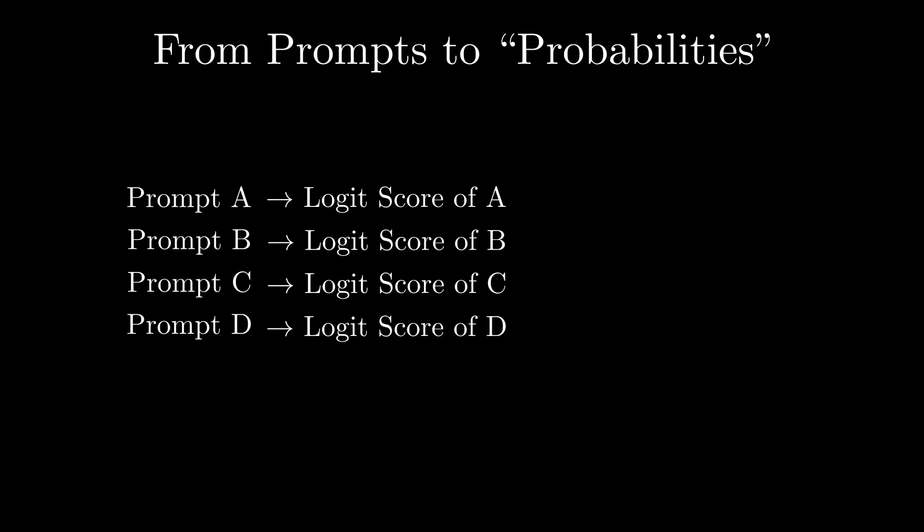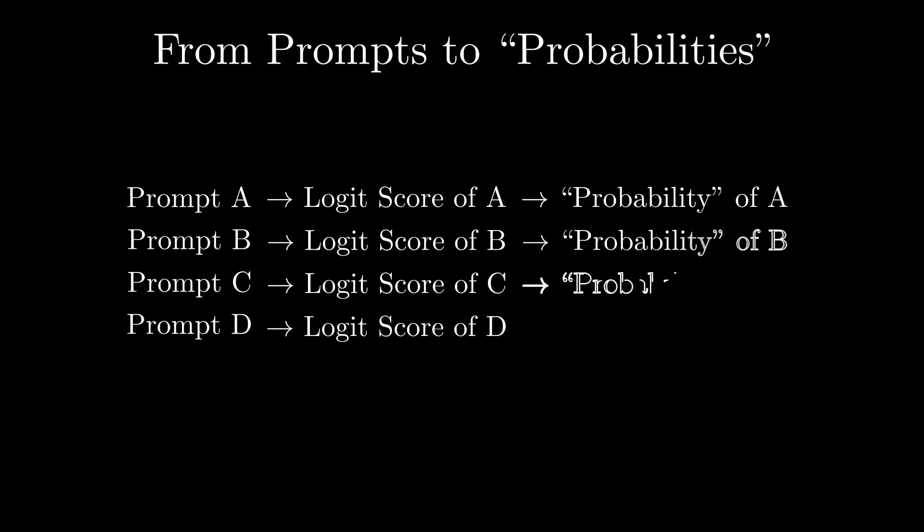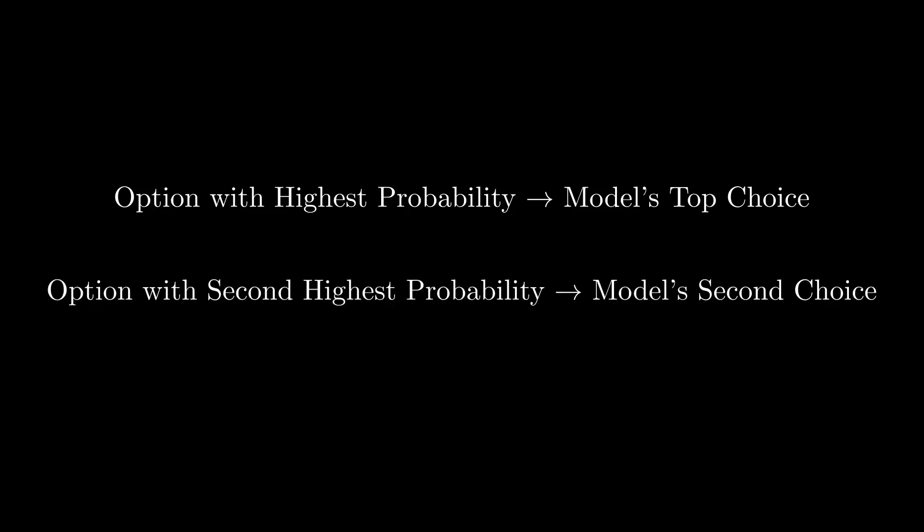To make these scores interpretable, the softmax function converts them into so-called probabilities. These probabilities represent the model's estimation of the likelihood that each answer is the correct one. With these probabilities in hand, we can easily identify the answer with the highest probability as the model's top choice, the answer with the second highest probability as the model's second choice, and so on.